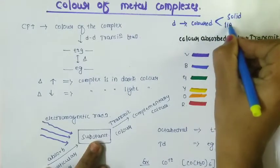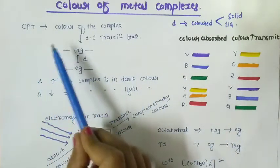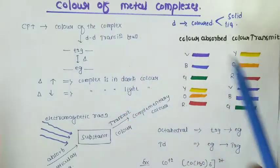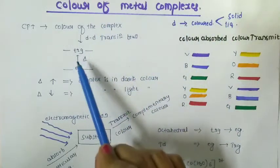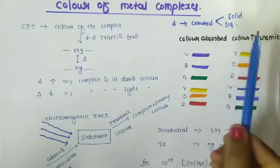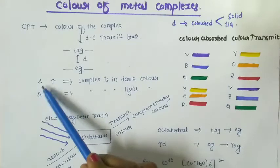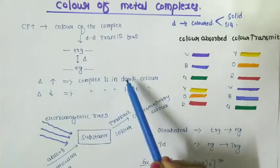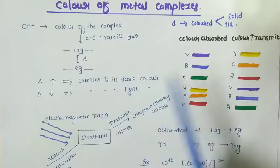According to Crystal Field Theory, the color of the complex depends on the d-d transition between t2g and eg sets of orbitals, having an energy difference delta. When the delta value is more, the complex is dark in color. When delta value is less, the complex is light in color.